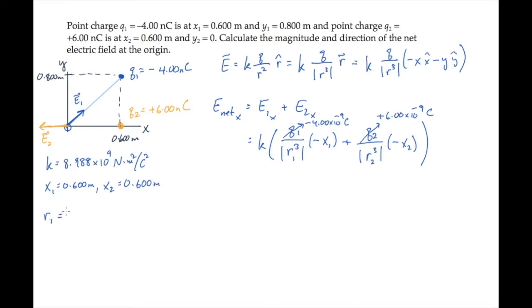Now we can calculate r1 using the Pythagorean theorem. 0.6 meters squared plus 0.8 meters squared square root equals 1 meter. And the distance between charge 2 and the origin is 0.6 meters. When we substitute all of those numbers and calculate, we find that the x component of the net electric field is negative 128 newtons per Coulomb.